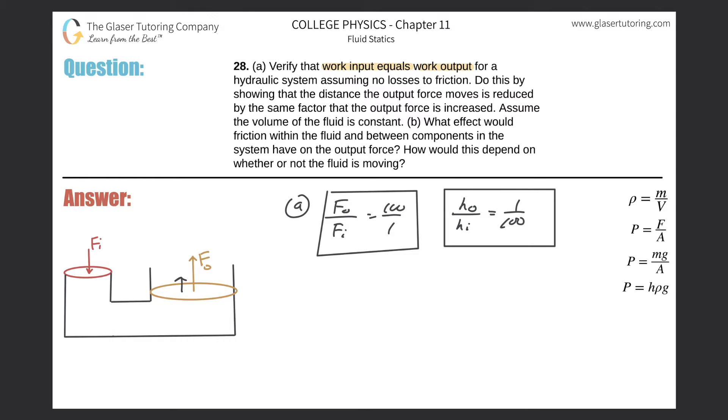It says verify that the work input equals work output. Remember, work is simply force times distance. Let's look at the work input: it would be force input times the distance or the height input. By the way, H and D in this problem are the same thing.